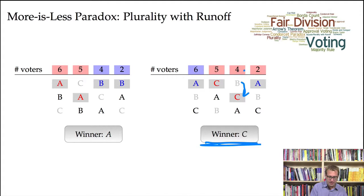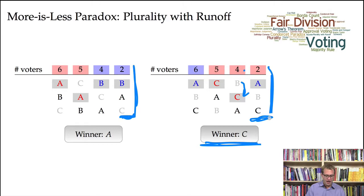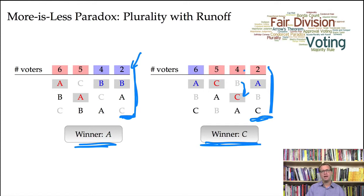This certainly seems odd. C is the last group's least favorite candidate. Suppose a poll before the election shows A is projected to win. Two voters decide to jump on the bandwagon and rank A first rather than second. By doing that, what actually happens is candidate C — their least favorite candidate — turns out to be the winner. So this is the more is less paradox.